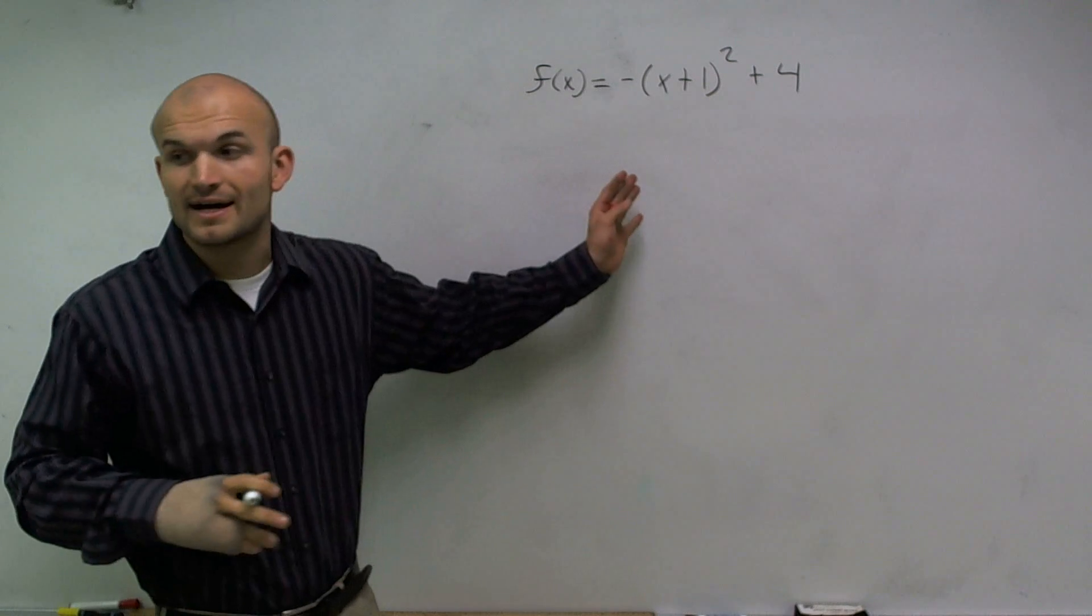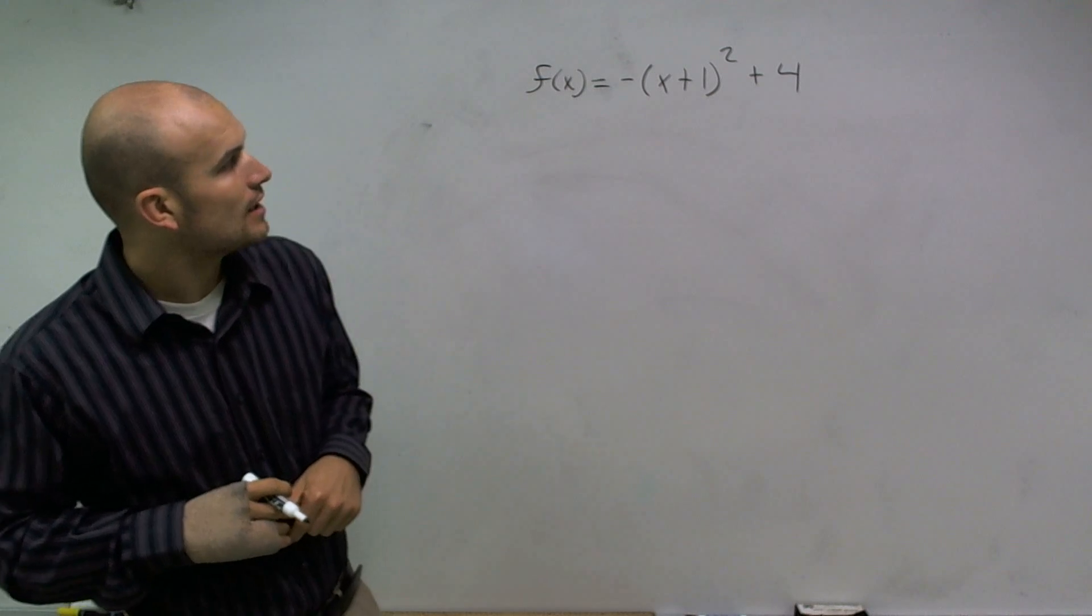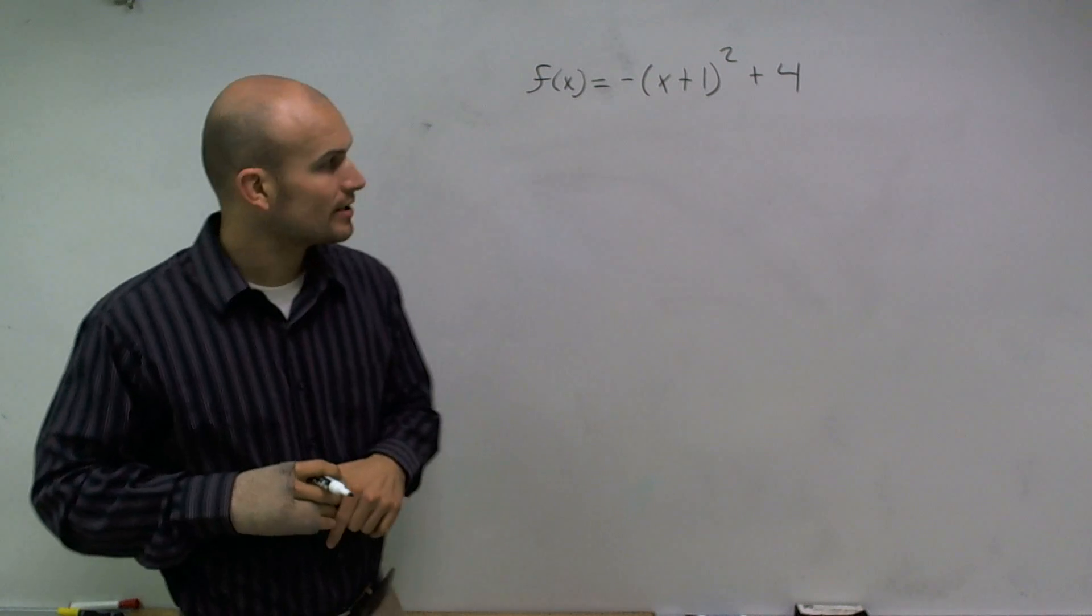Okay, what I'd like to do is show you how to find the axis of symmetry when given a function: negative x plus 1 squared plus 4.